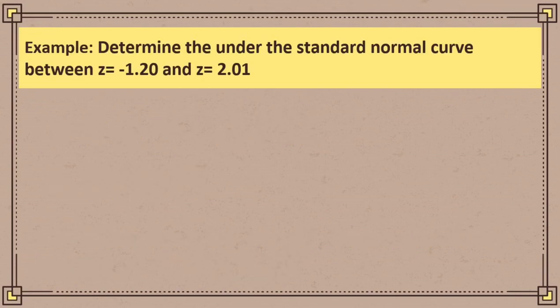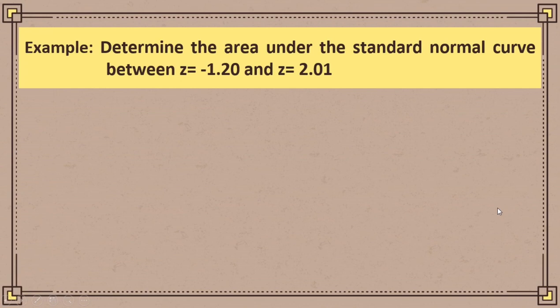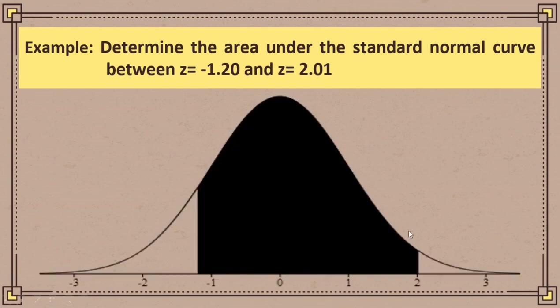Another example: determine the area under the standard normal curve between z = -1.20 and z = 2.01. We have additional cases to follow. Between values a and b, if they have the same sign, subtract the biggest area by the smallest. If a and b have different signs, add the two areas. Construct the normal curve and shade the region between -1.20 and 2.01.